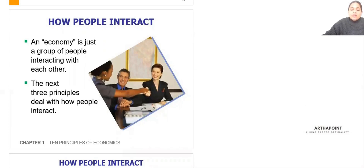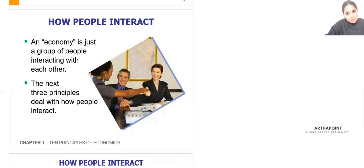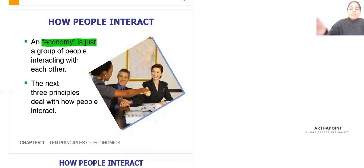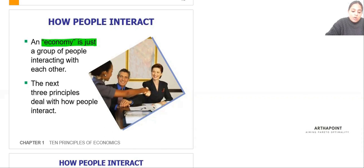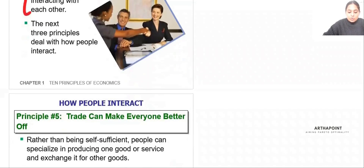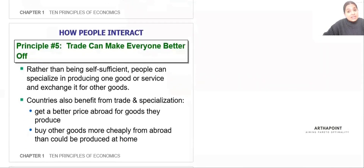The first four principles we have studied have been associated with how people decide, what trade-offs they face, and how they decide what to do. Now we want to understand how people interact with each other. Economy is nothing but a group of people that live, and how people interact is how the economy is going to function. The next three principles are related to how people interact with each other.